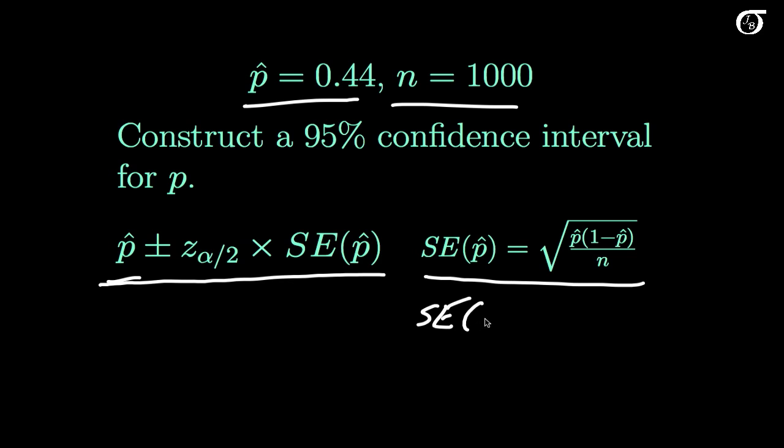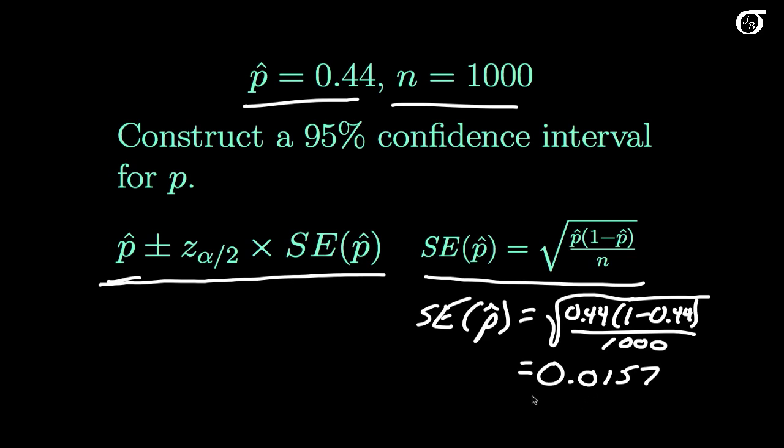Our standard error of our sample proportion, p-hat, is just going to be the square root of our sample proportion, which is 0.44 times 1 minus the sample proportion, over n, which is 1,000. And if you throw all of that into your calculator, you'd see that this is 0.0157. So the standard error of our sample proportion is 0.0157, rounded to 4 decimal places.